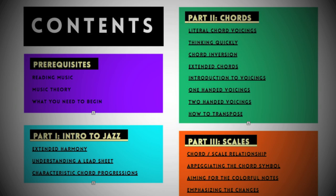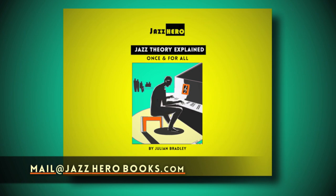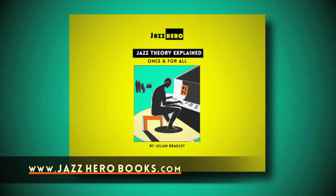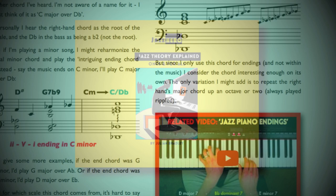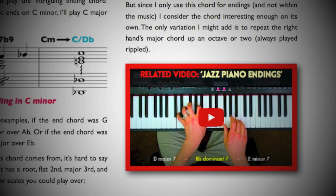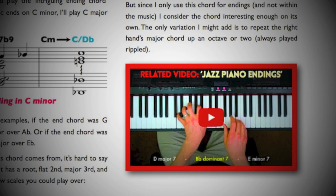I hope that's answered some of your questions. If you have more, you can email me at mail@jazzherobooks.com. To get your own copy of Jazz Theory Explained Once and for All, visit jazzherobooks.com. It's an ebook — a digital download — that fits perfectly on an iPad or tablet. You can glide through the pages easily, all the links are set up so you can click to open a video or jump to another section. I also offer a 90-day money-back guarantee, so if for any reason the book's not for you, that's absolutely fine.